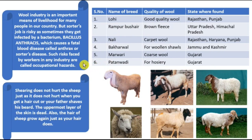This wool industry is an important means of livelihood for many people. But the sorters' job is risky — sometimes they get infected by the bacterium Bacillus anthracis, which causes a fatal blood disease known as anthrax or sorters' disease. Such risks faced by workers in any industry are known as occupational hazards. Also, shearing does not hurt the sheep, just as it doesn't hurt when you get a haircut. The uppermost layer of skin is dead, and the hair of sheep grows back just as our hair does.